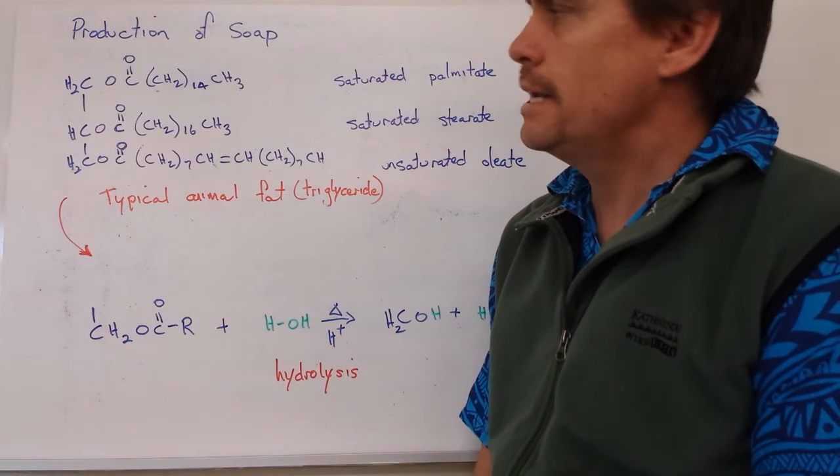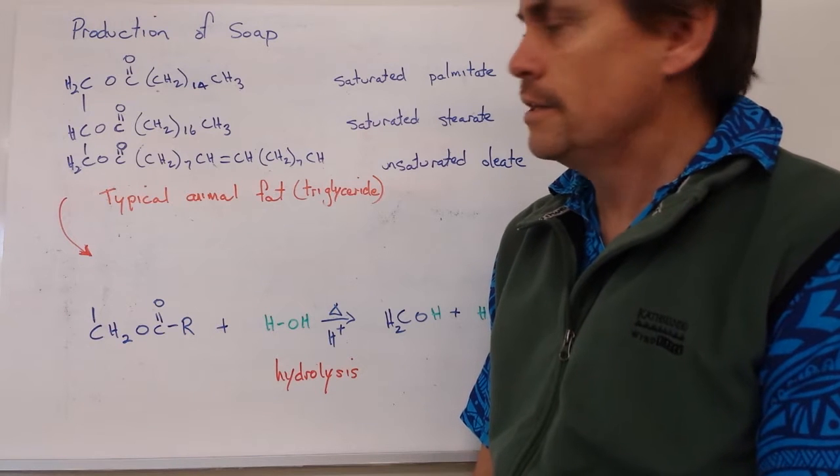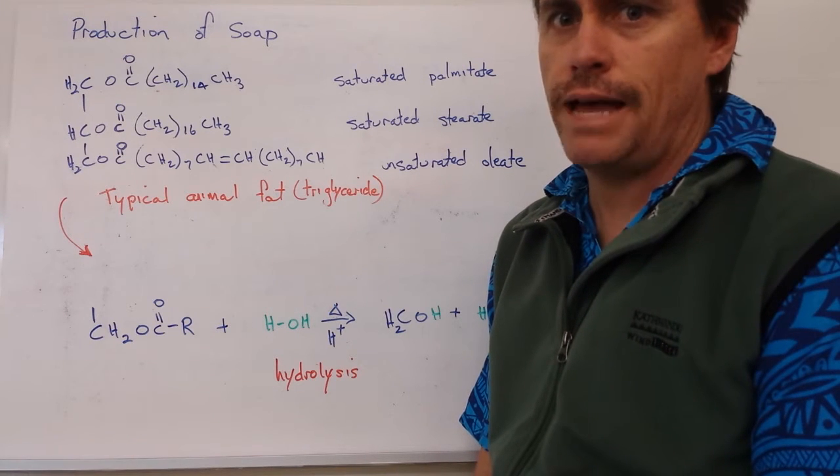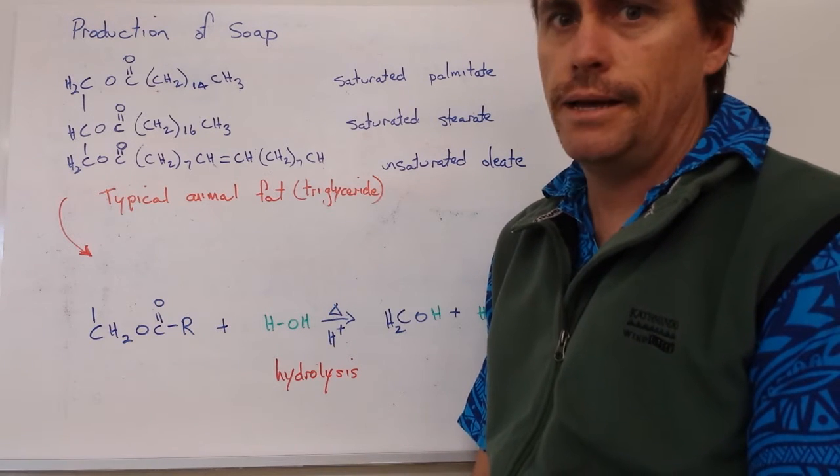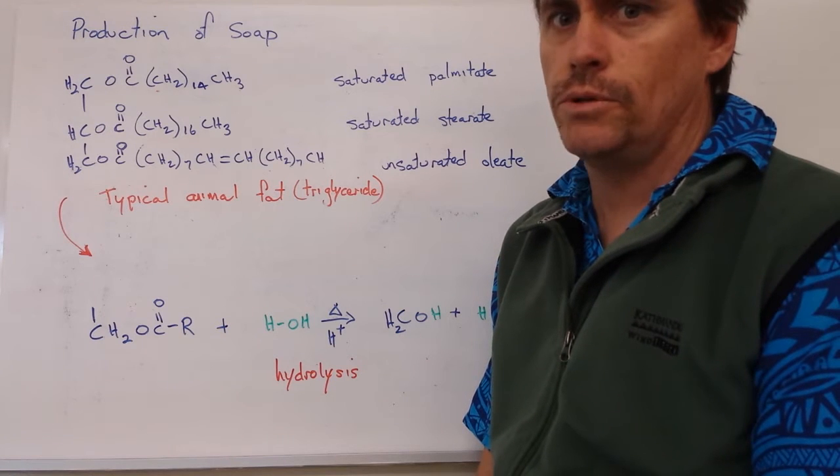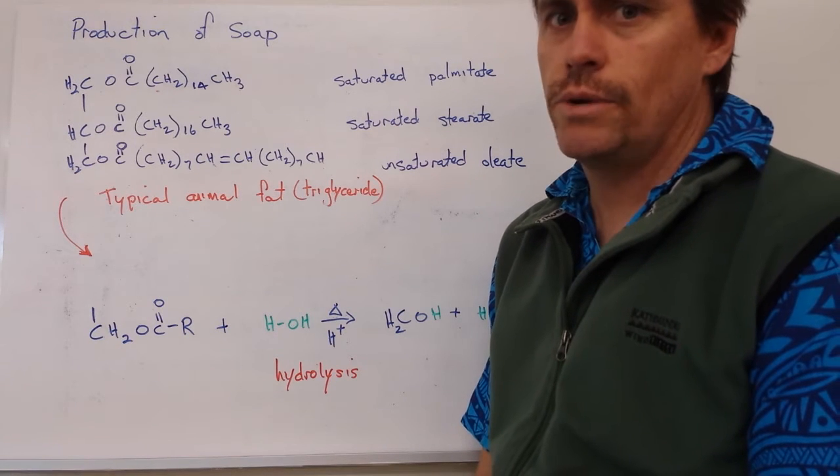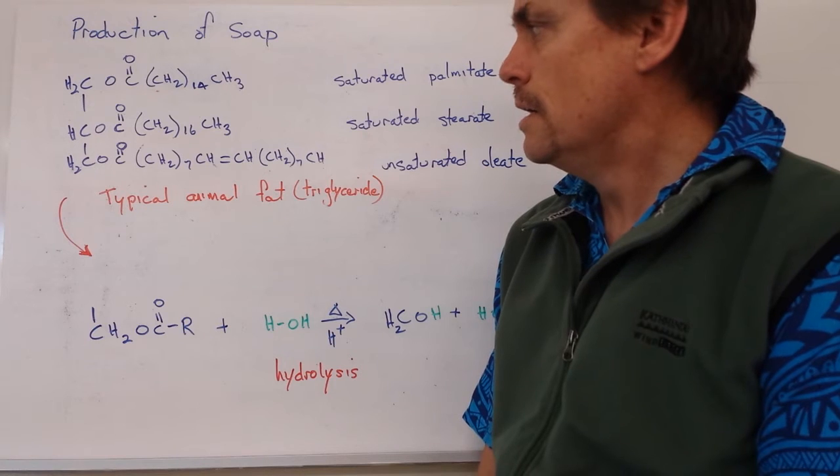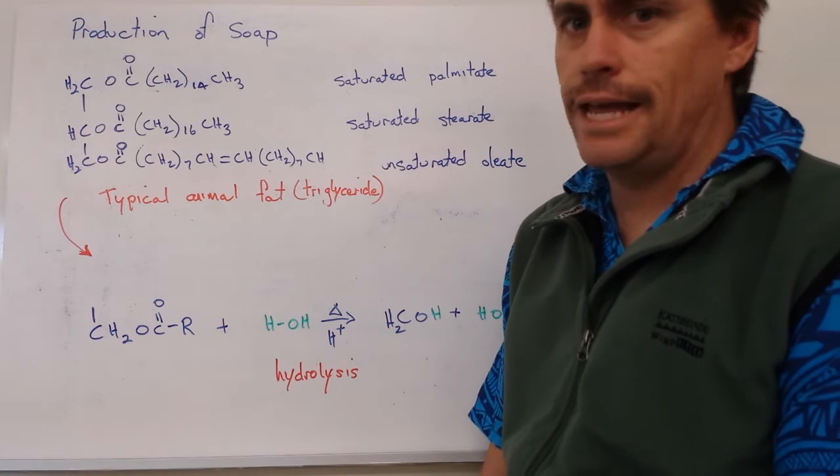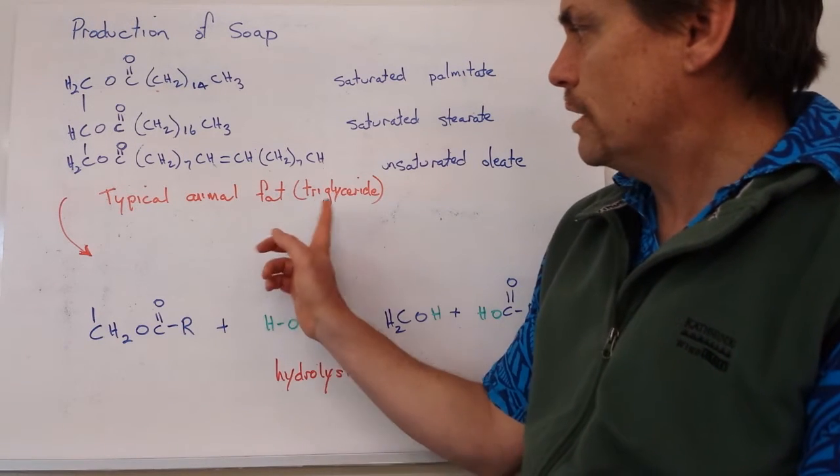So soap is made up of two components. The first one is a typical fat, and that could come from plant or animal product. And the second one is a strong lye solution. So let's have a look in more detail at that fat, or what they call a triglyceride.